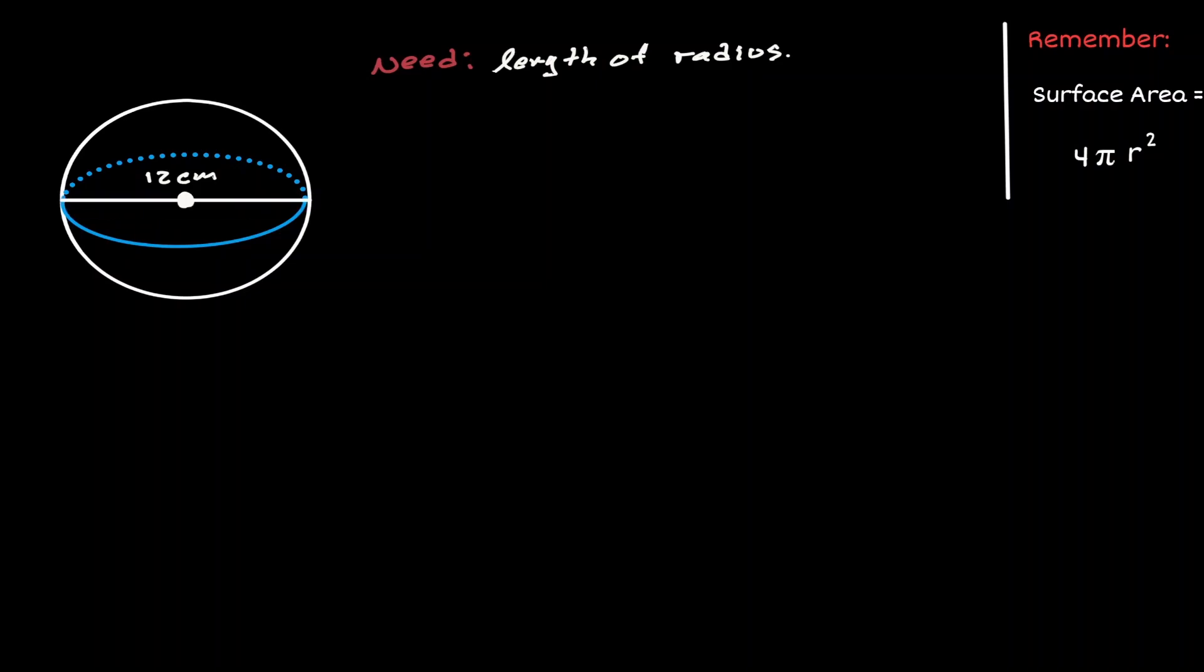Then we can say that half of this distance is the radius of our sphere, which is equivalent to 6 centimeters. And now that we have the length of the radius in our sphere, we can just plug it into our formula and obtain the surface area.